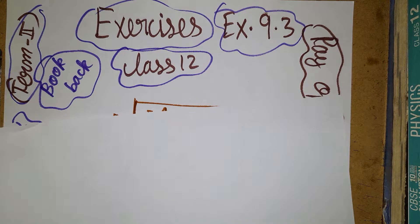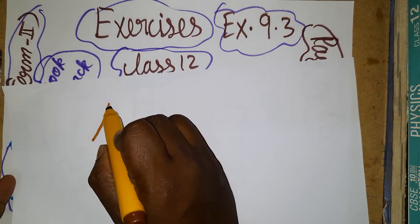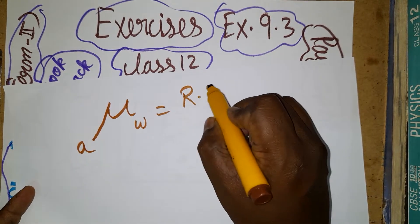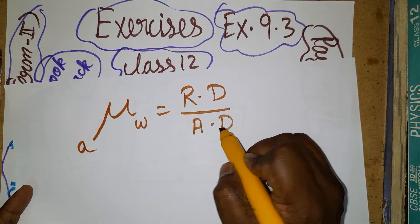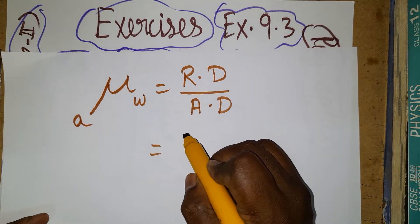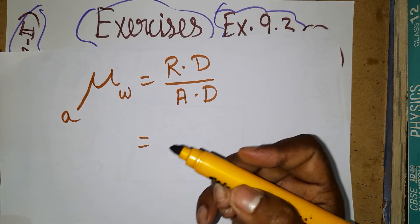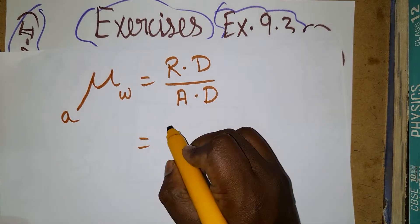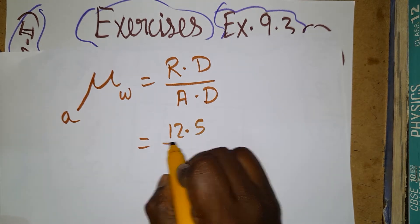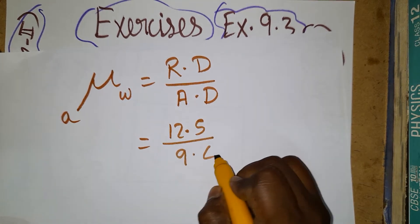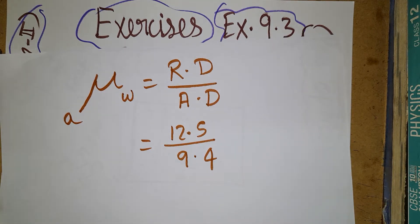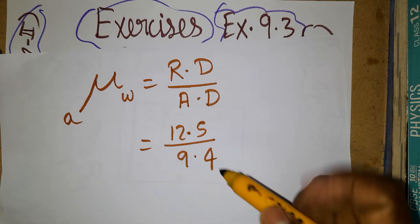For Case 1, the refractive index of the liquid (water) is given by: refractive index equals real depth divided by apparent depth. The real depth is the actual depth of the container, which is 12.5 centimeters. The apparent depth is 9.4 centimeters. So refractive index equals 12.5 divided by 9.4.